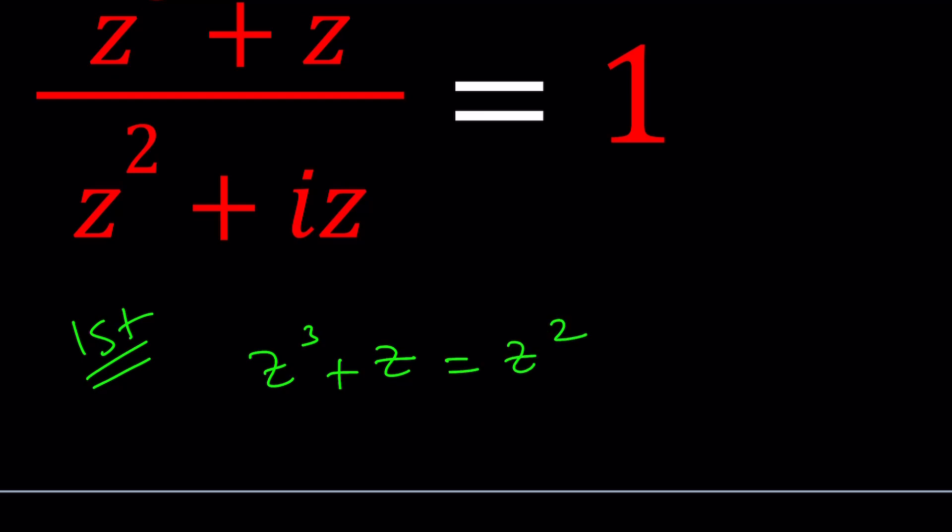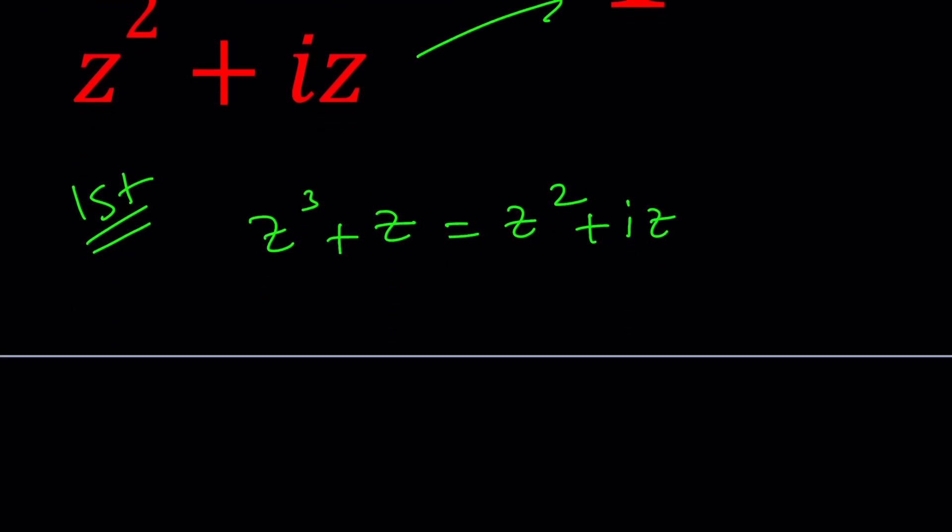So if you do that, you're going to get z cubed plus z equals z squared plus iz because I'm multiplying by 1. And then if you put everything on the same side, this will become like a cubic equation, right? But a nice cubic.